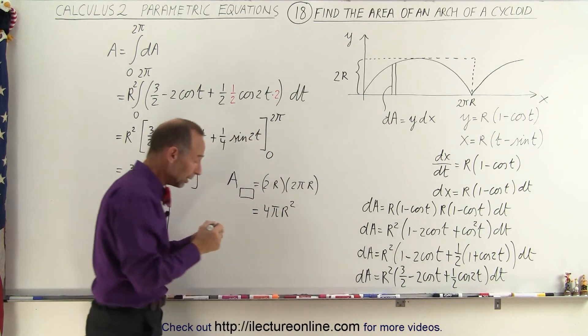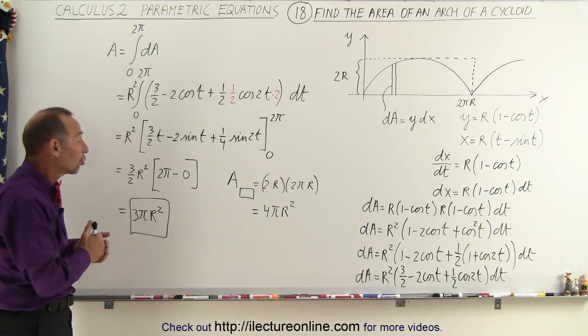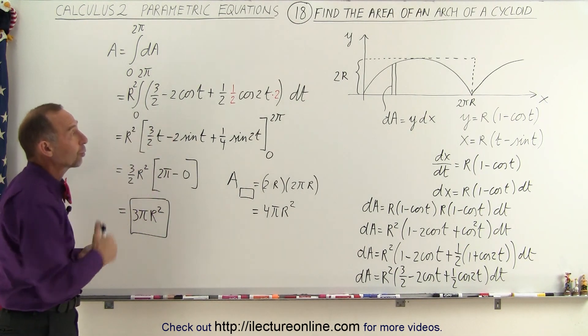That would be the area of the complete rectangle. And the area of the arch, we calculated it to be 3 pi r squared, which is 3 quarters of the area of the rectangle.